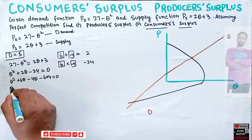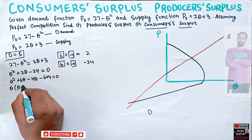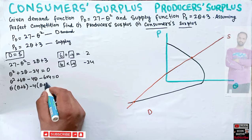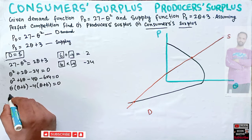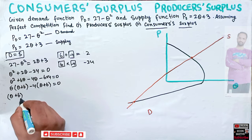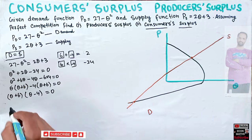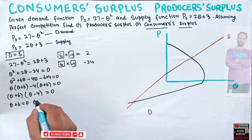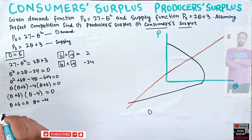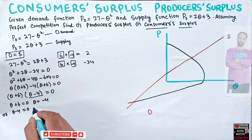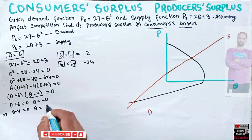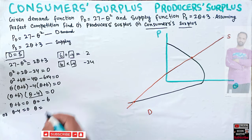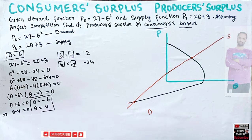Factoring out, we take Q as common from the first two terms to get Q(Q plus 6), and minus 4 from the last two terms to get minus 4(Q plus 6). This gives us (Q plus 6)(Q minus 4) equals zero. So either Q plus 6 equals zero, giving Q equals minus 6, or Q minus 4 equals zero, giving Q equals 4. We have two values for quantity.